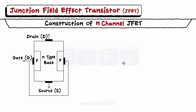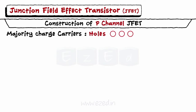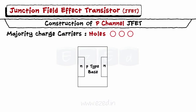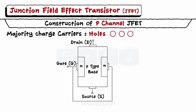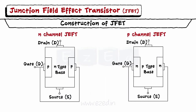A JFET has three terminals: source, drain, and gate. Similar to BJT, JFET also has two PN junctions. For constructing a P channel JFET, we take a P substrate and dope N type semiconductors at the two ends to form the gate. Thus, the two types of JFETs are constructed as shown.